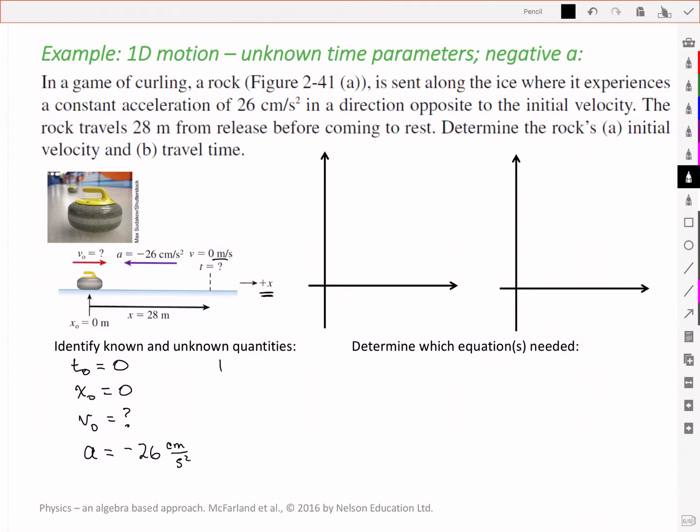At a later time, t, that we don't know, we've got a position of positive 28 meters, a velocity that is zero because it's at rest.